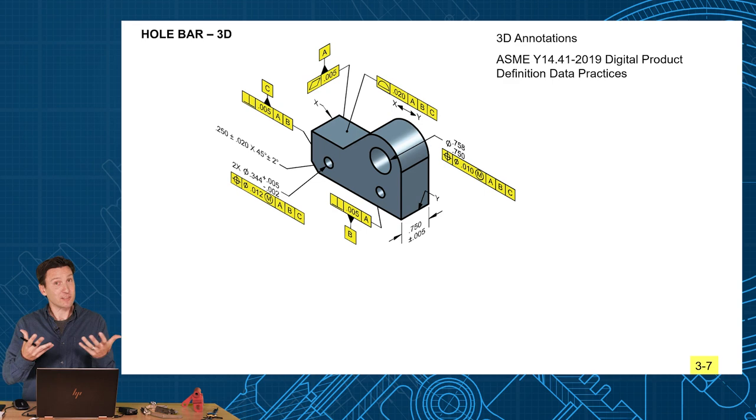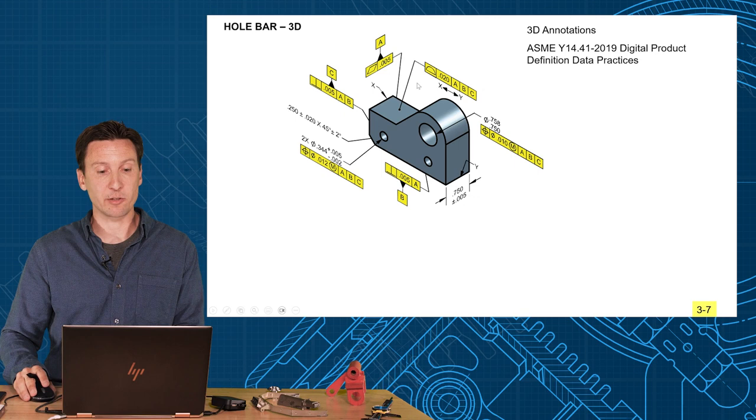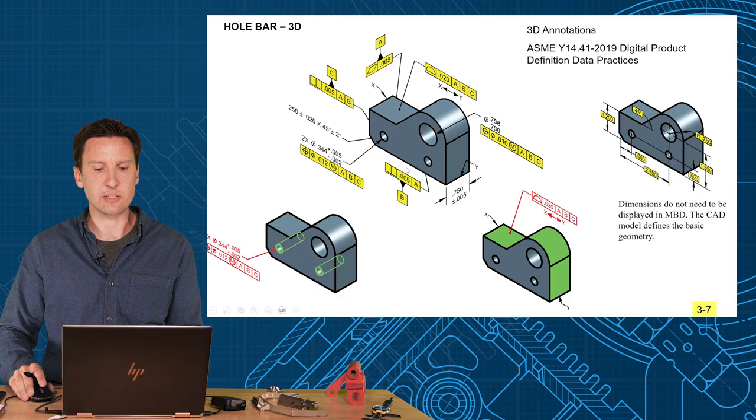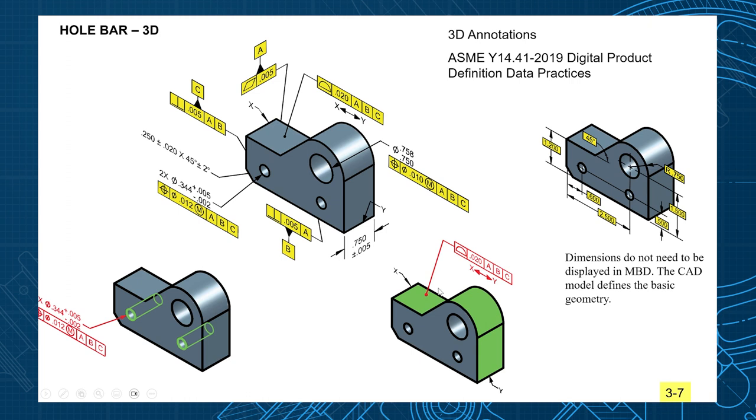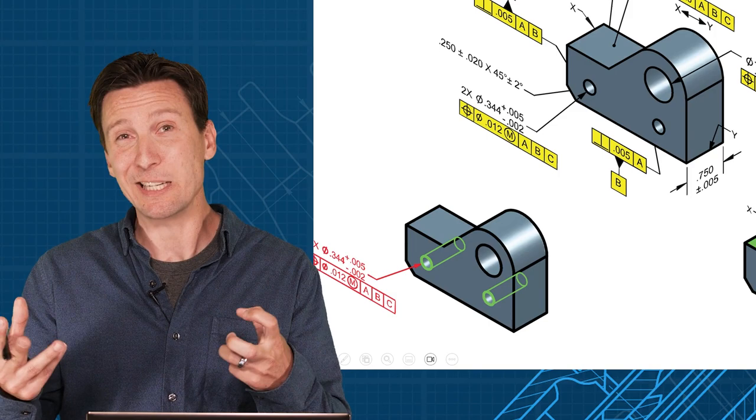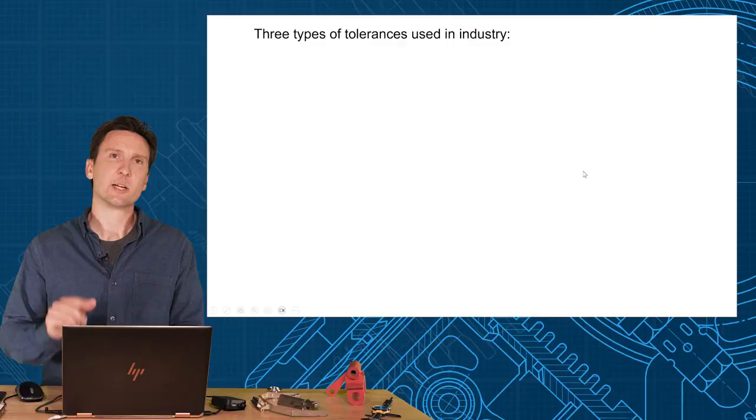The great thing about feature-based tolerancing and those mathematical descriptions is they are machine-readable. A lot of companies are moving towards model-based definition, where we can apply tolerances to 3D models. When you have 3D models, you don't have dimensions anymore. So you lose your dimension, you lose your tolerance if you had a plus-minus system. With geometric tolerancing, we apply the tolerances to each feature and they're all digitally associated. When I click this profile tolerance, it should associate to that surface, and the machine knows exactly what tolerance is applied there. When you click this position tolerance, it should automatically highlight the two features it applies to. Model-based definition, MBD, is only possible with a system that's feature-based.